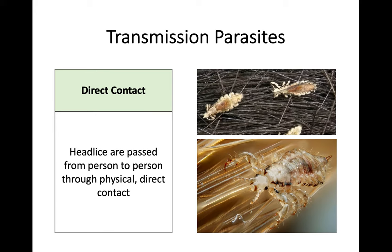In terms of direct contact, this is just straightforward physical direct transmission. An example of this could be headlice. They just get passed from person to person — they can live in the hair of someone, and if you make contact with that person's hair, they will physically cross over onto you. It's a fairly straightforward mechanism of transmission, and we just know this as direct contact.